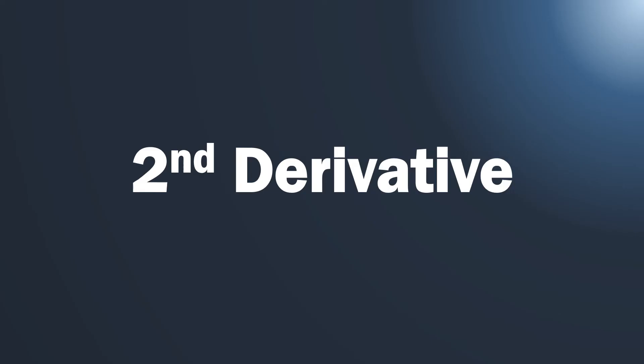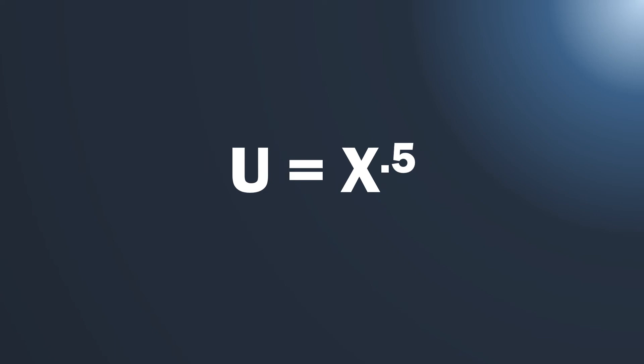We can follow up and confirm it's definitely a maximum and not a minimum by using the second derivative. To understand how the second derivative is used, let's use a new utility function with simpler numbers: U = x^(1/2). That's just our entire utility function — not a derivative — and we want to think about what happens when we add more and more x.